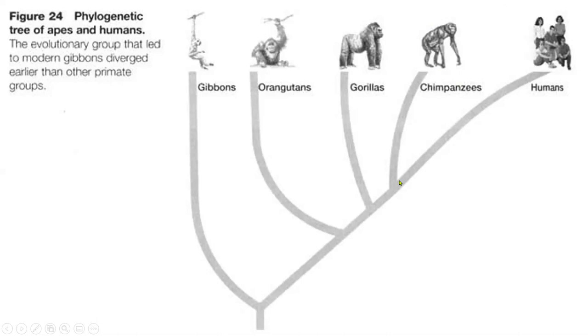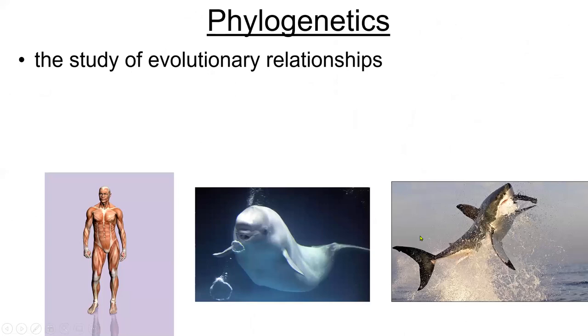And if you go further down the line, this intersection is the most recent common ancestor between all three — gorillas, chimpanzees, and humans. So that's how you interpret these diagrams. It's called a cladogram. It's just a way of depicting evolutionary relationships.